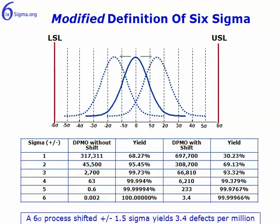In fact, 3.4 defects per million is not exactly right if we ignore the 1.5 Sigma shift that is presumed to take place in processes. As processes live over time, their performance is thought to degrade by about 1.5 Sigma, and when you account for that, you get 3.4 defects per million. But as we'll see in a later module and an exercise in Minitab, to a statistician — in terms of the standard normal distribution — two defects per billion opportunities is the true definition of Six Sigma. Keep that in mind as you talk to colleagues and co-workers trained in process improvement or Lean Six Sigma.